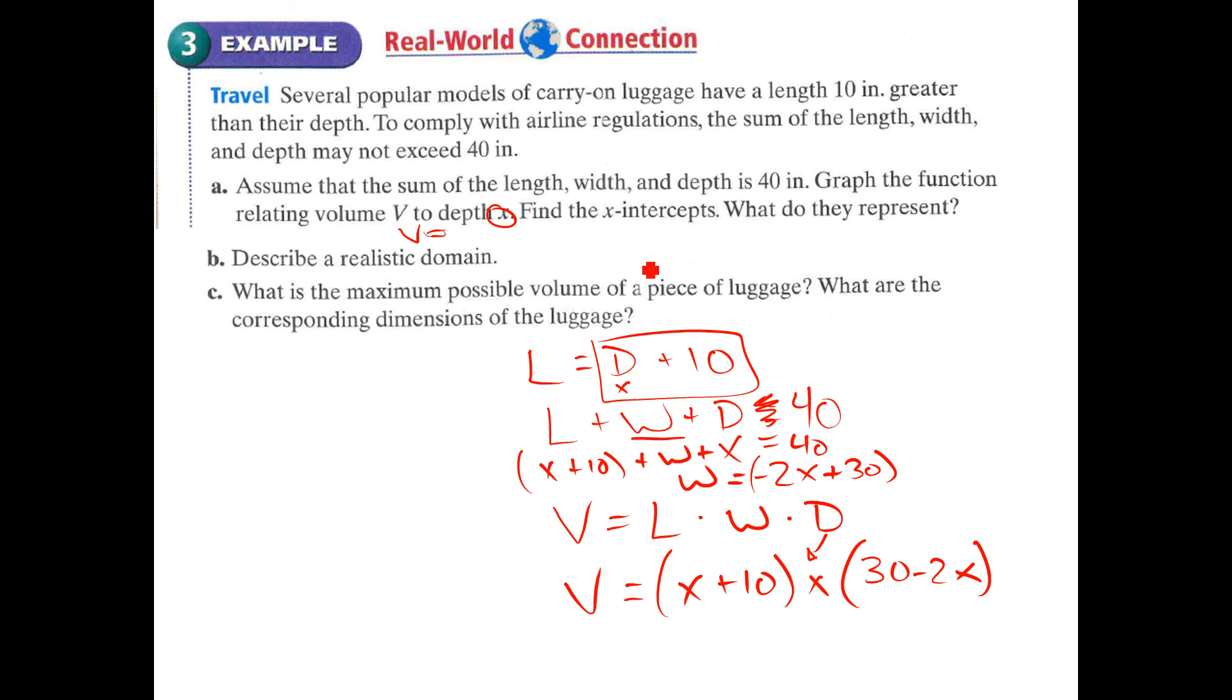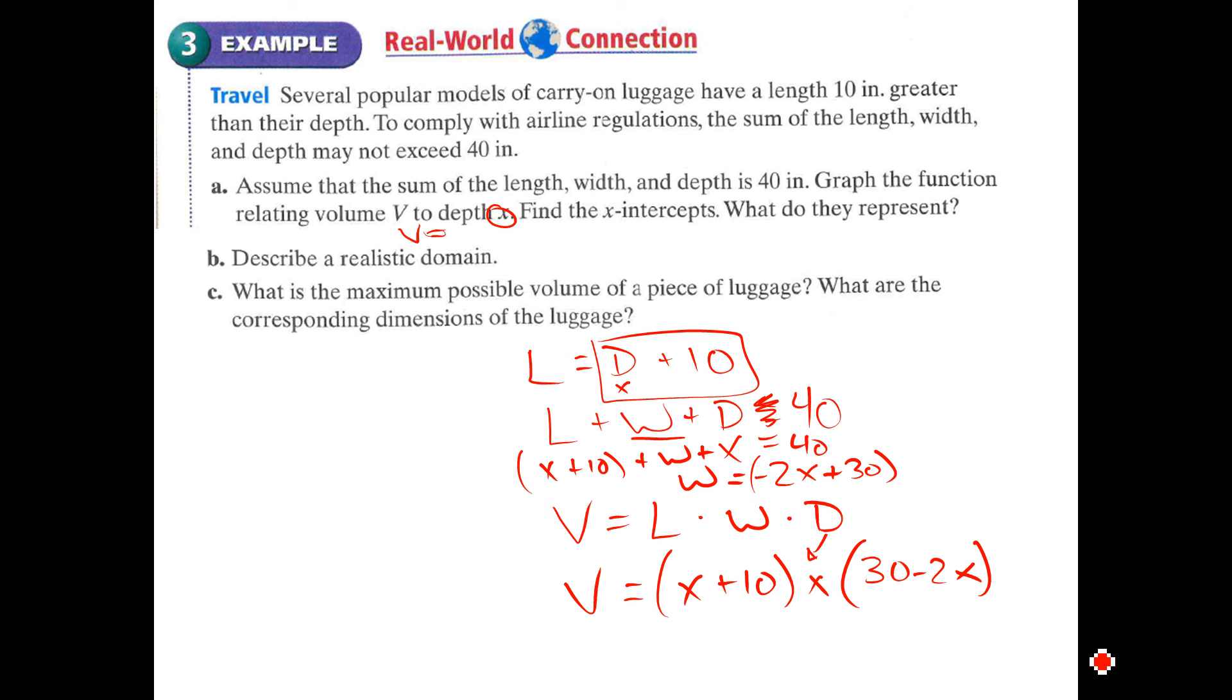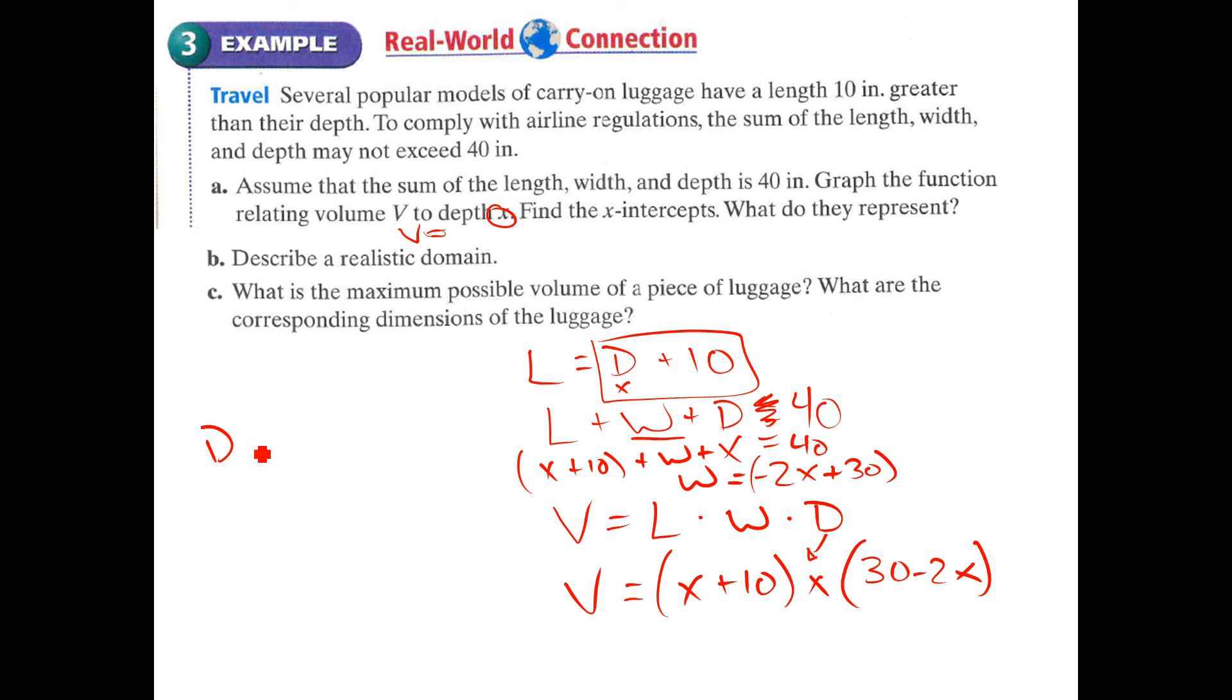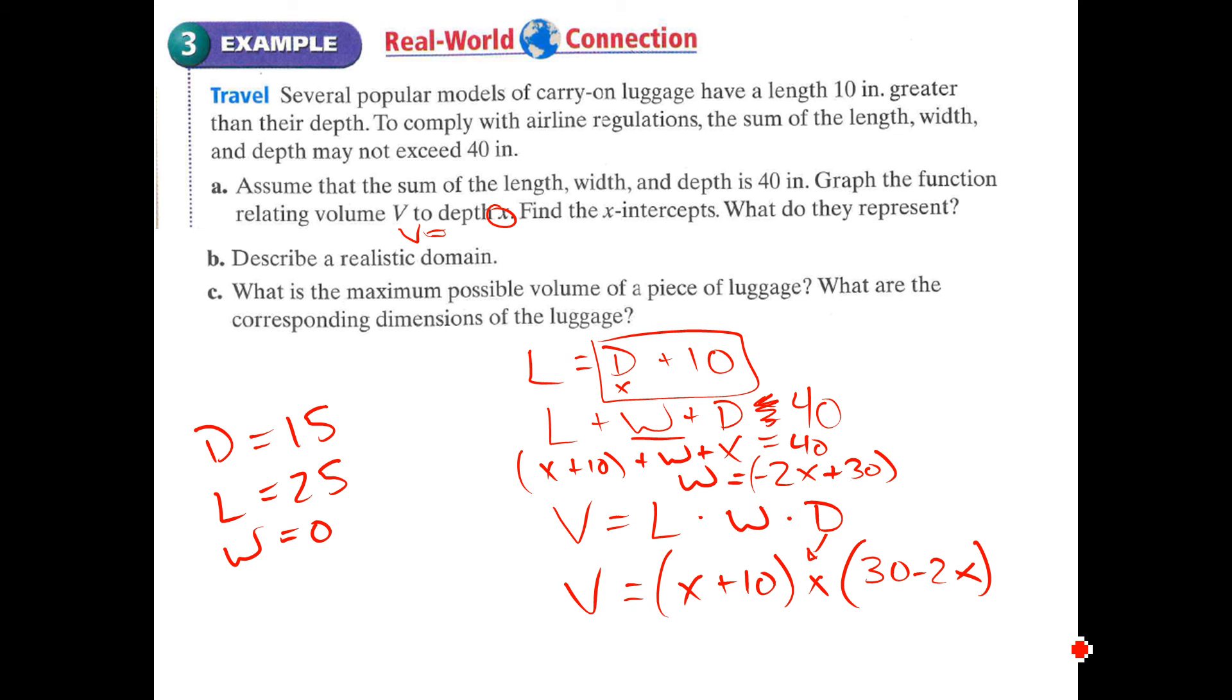Let's take a look. And the x-intercepts. The x-intercepts are negative 10, 0, and 15. What do they represent? Those are numbers that would cause our volume to be zero. So if the depth was 15, the volume would be zero. That's because we would have a depth of 15. Remember that the length is 10 more than that, so the length is 25. And then that would leave nothing left for the width. The width would be zero. So that would be a very skinny piece of luggage. Part b, describe a realistic domain. This portion right here is where the volume is positive. So I think the domain should be between zero for x and 15 for x. So our domain is going to be zero is less than x is less than 15. Why not equal? Because we don't want to have a volume of zero.